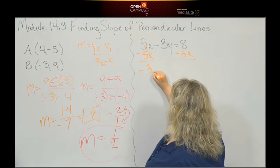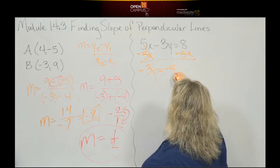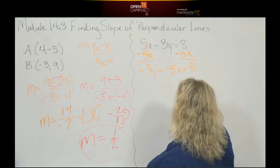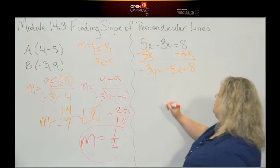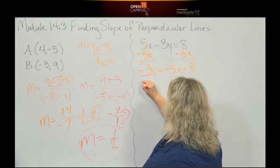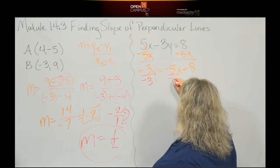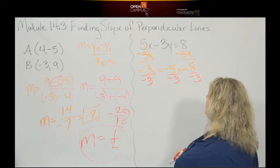And that gives me negative 3y is equal to negative 5x plus 8. And then I'm going to divide by negative 3, right, because I have to get rid of that. So I do that all the way across the board.